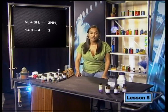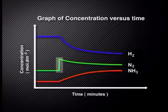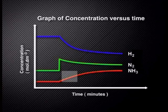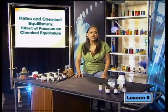We learned in a previous lesson how we can use graphs to show the effect of a change in concentration on equilibrium. Let's recap what we learned and then see what will happen to the graphs if pressure changes. Nitrogen was added to the equilibrium in this system, causing a spike in the concentration of nitrogen. Then the forward reaction was favored to decrease the added nitrogen. Therefore, the concentration of ammonia increased.